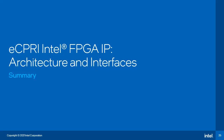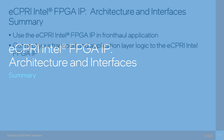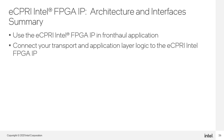That concludes our look at the architecture and interfaces of the eCPRI Intel FPGA IP. In this training, you learned how the blocks found in the eCPRI Intel FPGA IP work to process eCPRI and other packets in the system. This will help you best plan for how to employ the IP in your own front-haul application. You also learned the interfaces found on the IP core so you can connect your own transport and application layer logic.